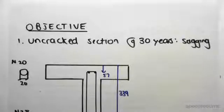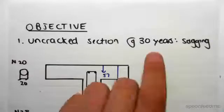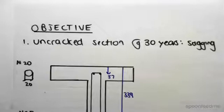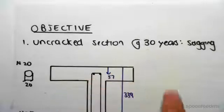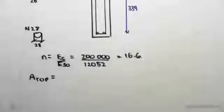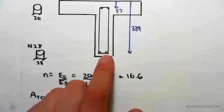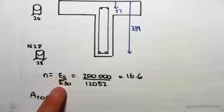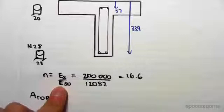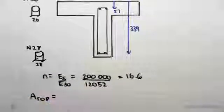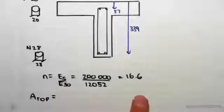The objective of this video is to find the uncracked section properties — ȳ and I — at 30 years, looking at the sagging case. The process between the 30-year case and the 28-day case is exactly the same; the only difference is the modular ratio n, which is now 16.6, because we found a new elastic modulus for 30 years in the previous video.